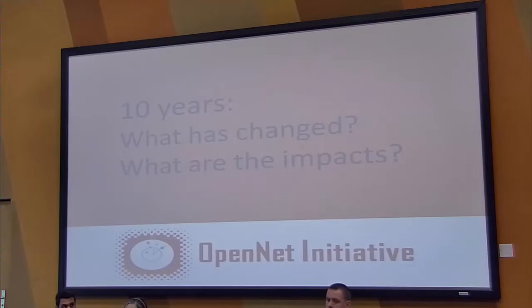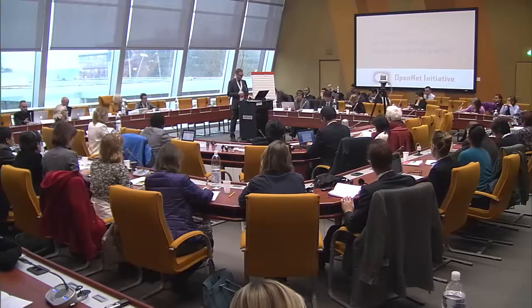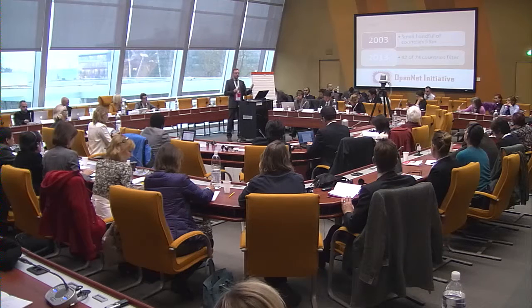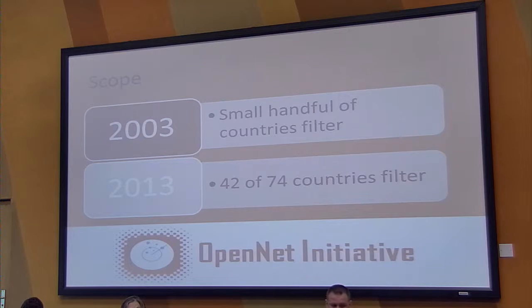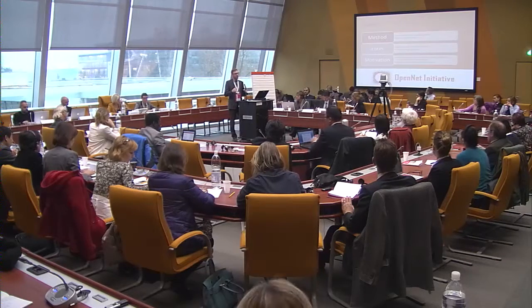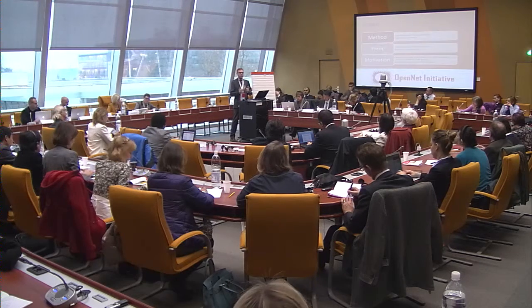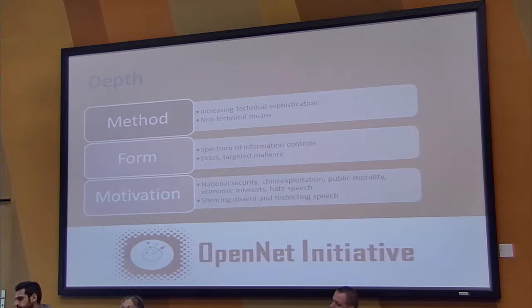We've been studying this for 10 years, and on the internet that's many generations. What has changed over the course of those 10 years? First, the scope of censorship. When we first started in 2003, only a very small handful of countries filtered the internet. By 2013 we've been able to document 42 countries who filter some form of content, which only underestimates the total number. The depth of filtering has also changed, with increasing technical sophistication and a growing role of non-technical means — legal, policy, and regulatory mechanisms — used to restrict what citizens can say online.